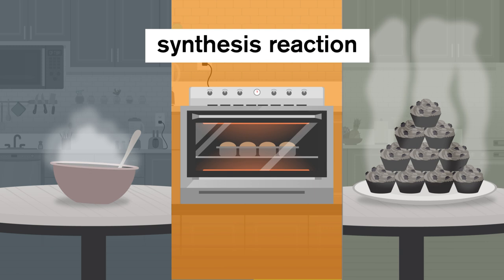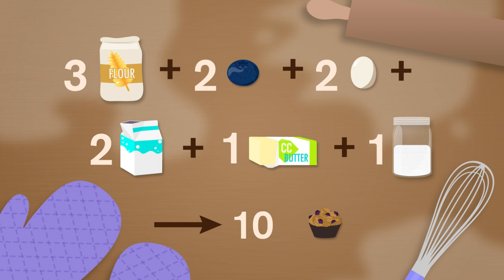Combine the ingredients, add heat, and you get 10 muffins as the product. We could write this reaction out using our amounts of ingredients as the coefficients.